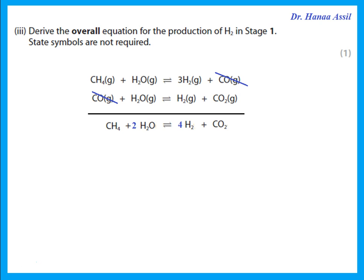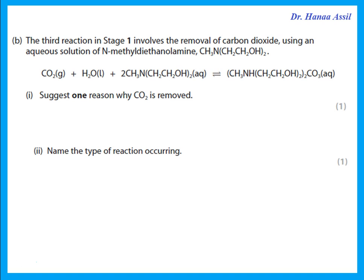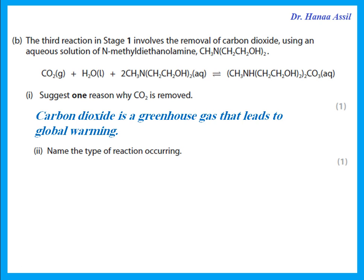State symbols are not required for the overall equation. The third reaction in stage one removes CO₂ using an aqueous solution of an amine compound. CO₂ is removed because it is a greenhouse gas that leads to global warming. The type of reaction: CO₂ is an acidic oxide reacting with an amine (a base), so this is a neutralization reaction.